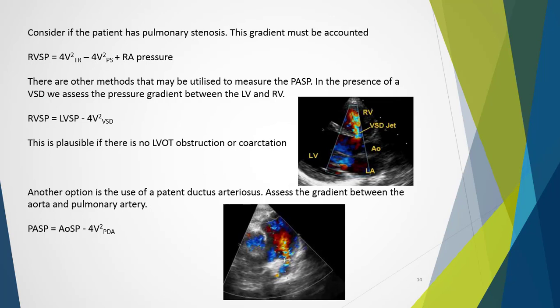There are other methods to measure pulmonary artery systolic pressure. In the presence of a ventricular septal defect, we assess the pressure gradient between left and right ventricles. By recording systolic blood pressure, we can manipulate the simplified Bernoulli: RV pressure = LV pressure − 4V²(VSD velocity). This is plausible if there is no LVOT obstruction or coarctation in the arm used for BP measurement, though the measurement cannot be made instantaneously unless the patient is monitored. Another option is a patent ductus arteriosus: PASP = aortic systolic pressure − 4V²(PDA velocity), where aortic systolic pressure is the systolic blood pressure from a BP reading.